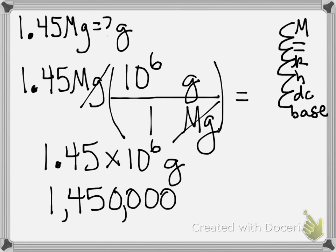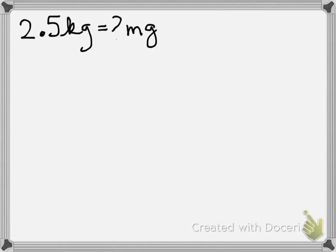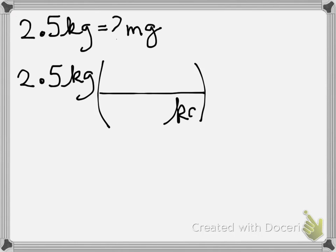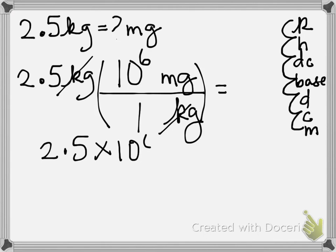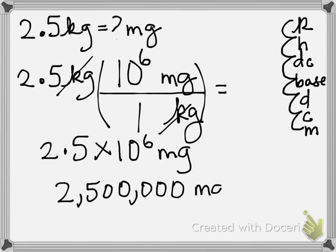Or 1,450,000 grams. Question number eight: 2.5 kilograms — how many milligrams is that? Again, 2.5 kilograms. Kilograms on the bottom, milligrams on the top. King Henry Died By Drinking Chocolate Milk. Kilogram is larger: 1, 2, 3, 4, 5, 6 — 10 to the 6th. Answer: 2.5 times 10 to the 6th milligrams, or 2,500,000 milligrams.